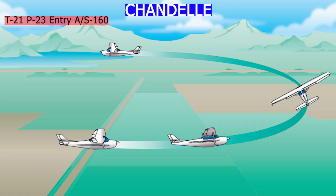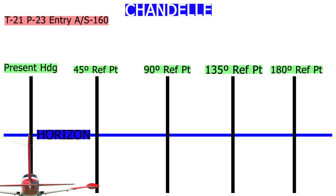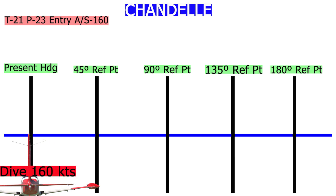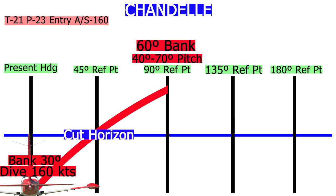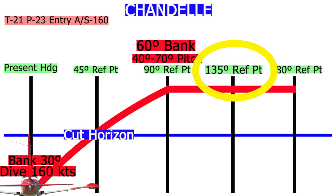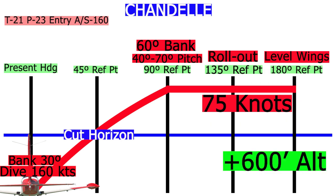Chandelle. Condition of flight: throttle 21, prop 23. Entry airspeed is 160 knots. Visually clear the area and declare the present heading, 45 degrees, 90 degrees, and 135 degrees reference points. Shallow dive to attain 160 knots entry airspeed. Make a 30-degree angle of bank, then apply back pressure to bring the nose above the horizon. Apply rudder pressure for coordinated aircraft control. At 45 degrees change of direction, the nose should pass the horizon, then continue climbing turn. At 90 degrees change of direction, pitch and bank angle should be at the maximum — approximately 40 to 70 degrees pitch up and 60 degrees angle of bank. At 135 degrees change of direction, roll out of the bank while maintaining back pressure. Wings level at 180 degrees change of direction. Adjust pitch attitude as necessary to maintain 75 knots airspeed. Climb at least 600 feet.